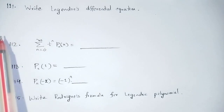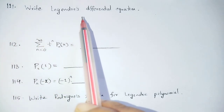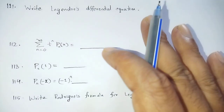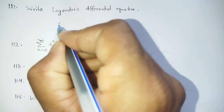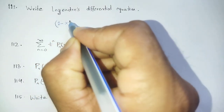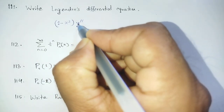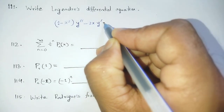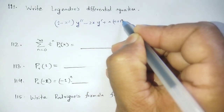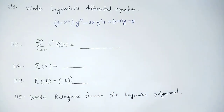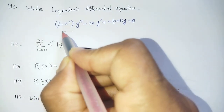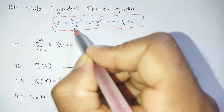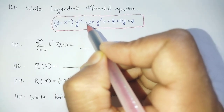Question number 111: Write Legendre's Differential Equation. Legendre Differential Equation: (1 - x²) y'' - 2x y' + n(n+1)y = 0. This is the second order differential equation, where y'' represents d²y/dx².